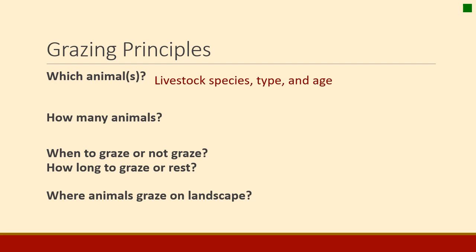Is it a cow-calf operation? Is it a yearling-ewe operation? What is it that you're trying to manage for on the range? Of course we could talk about wildlife too, but it's much more difficult to select a species or type of wildlife and manage them. So in grazing management, we're usually talking about livestock principles. The next question is how many animals should be out on the range? That is stocking rate.